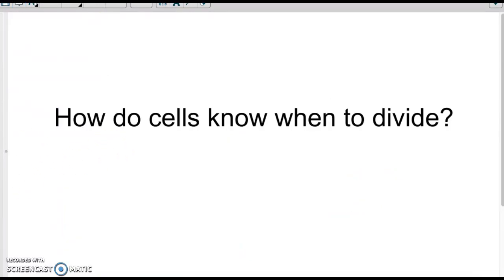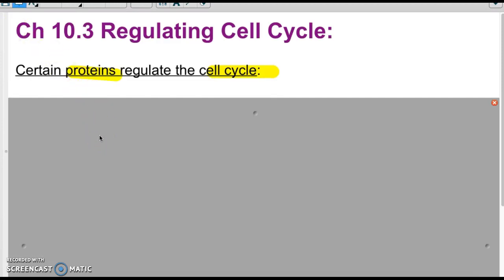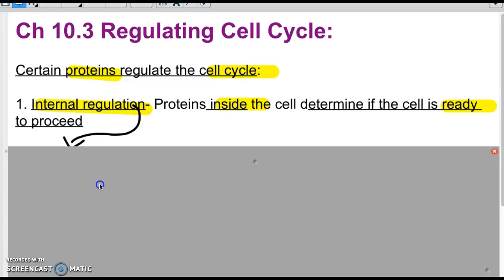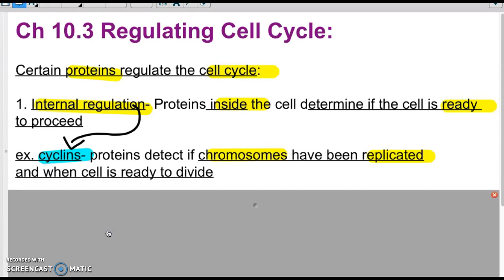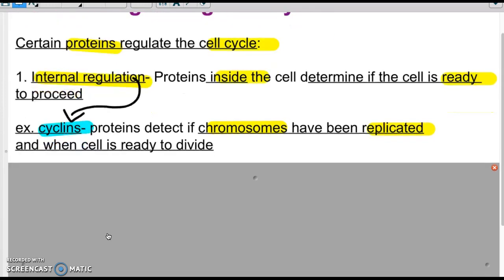So how do these cells know when they're supposed to divide? How do they know when they're supposed to go through cell division? Well, there are proteins that regulate the cell cycle. The first type of protein is called an internal regulation protein. Basically, these are proteins inside of cells, and they check for things happening inside of cells to determine when the cell is ready to go. A type of internal regulating protein that you need to know is called cyclins. Cyclins are proteins that check the chromosomes, they check to make sure they're replicated correctly, and then they check to make sure all the other parts of the cell are prepared and ready to divide.